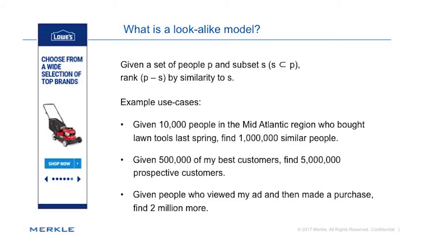So what is a lookalike model? It's very simple. Given a population of people — we do advertising, so we're interested in people — given a population and a proper subset, then score everybody who's not in the proper subset on their likelihood or similarity to be in the set. What we're doing in advertising is always big populations, comparing one population to another population, so we just change it into a classification problem: what's your likelihood of being in this class?